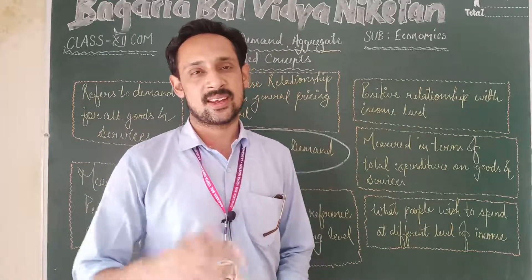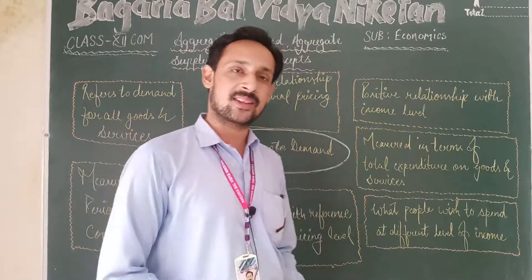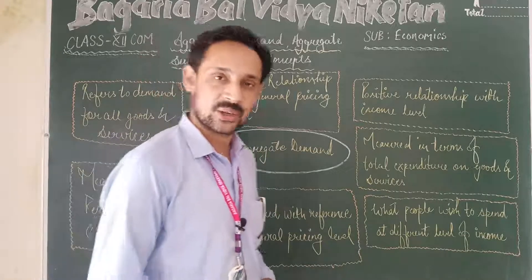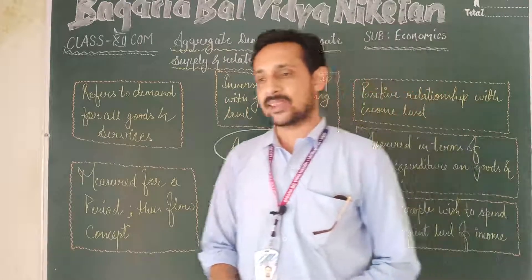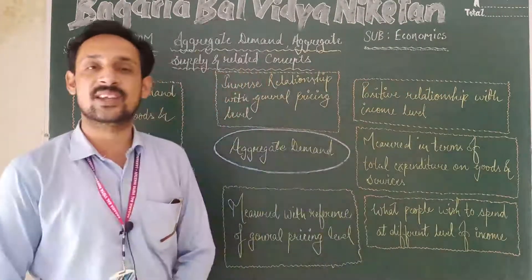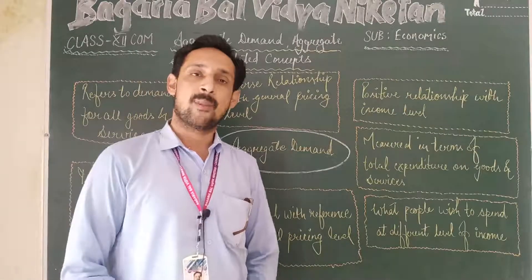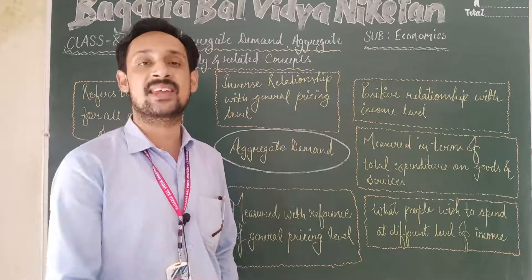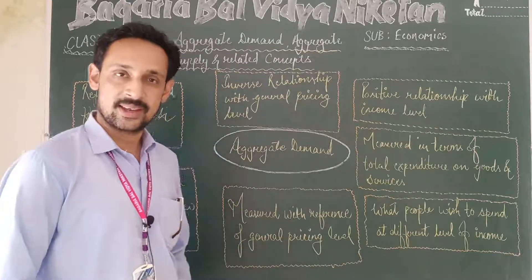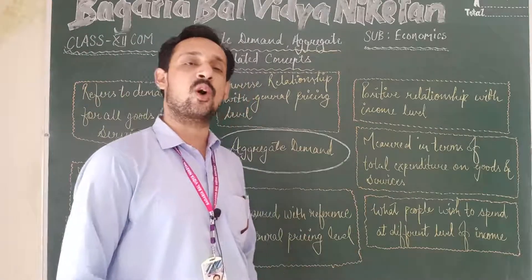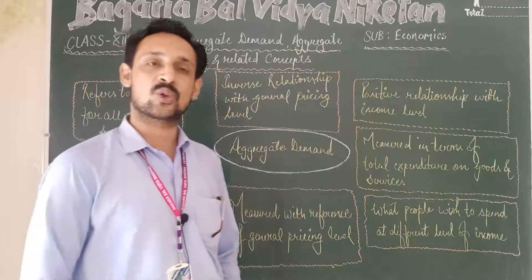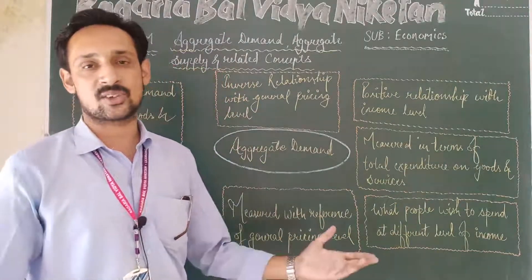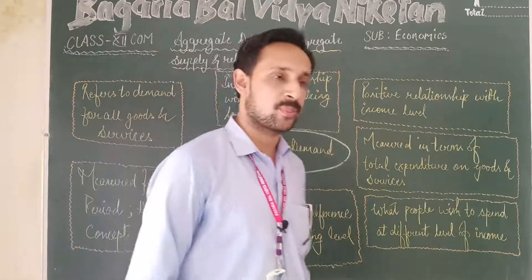What is the difference between individual demand, market demand, and aggregate demand? Individual demand is the demand for a particular good at various price levels by a specific consumer. Market demand refers to demand for a particular commodity by many consumers at various income levels. Aggregate demand is the sum total of planned expenditure — the total demand made during an accounting period for all types of goods and services.